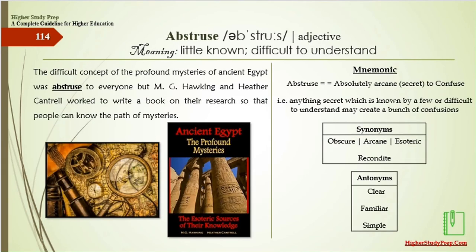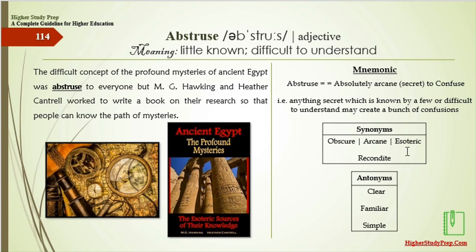Abstruse means little known or difficult to understand. Mnemonic: abstruse — absolutely arcane or secret to confuse; anything secret known by few or difficult to understand may create confusion. The difficult concept of the profound mysteries of ancient Egypt was abstruse to everyone, but Hawking and Cantrell worked to write a book on their research so that people could know the path of those mysteries. Abstruse also means obscure, arcane, esoteric, or recondite. The antonyms of abstruse are clear, familiar, or simple.